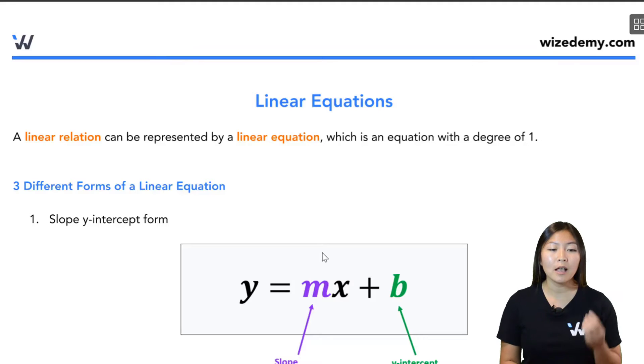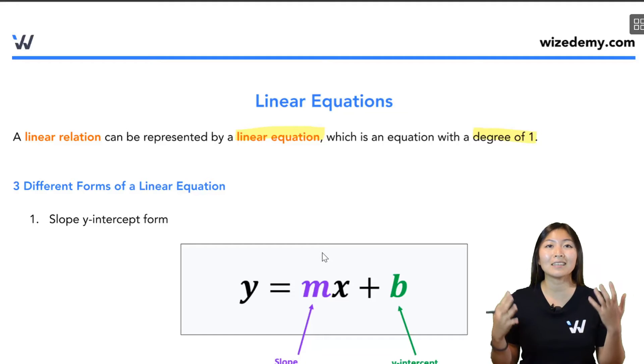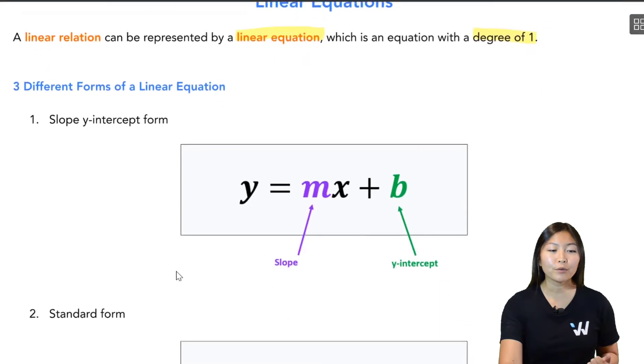When you have a linear relation that could be represented by a linear equation, remember these are just equations that have degree of one, meaning that the independent variable, usually called x, has an exponent of one. So there are three different forms of linear equations that you have to be familiar with.